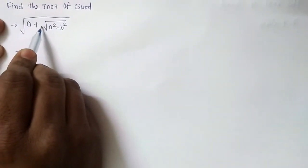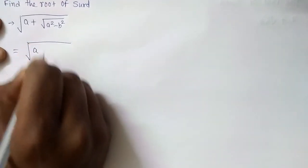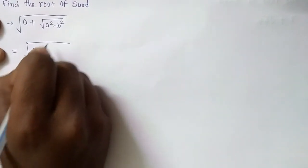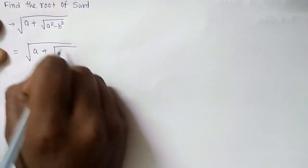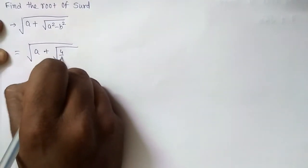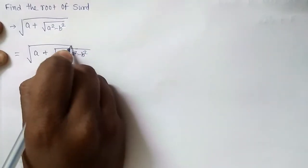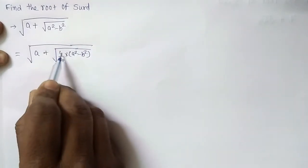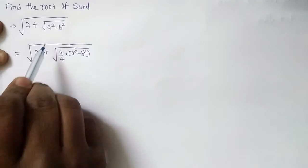Now, as I told you, if it is not there, then we need to take it anyhow. So I should write it 4 upon 4 into a square minus b square. Then 4 and 4 will be nullified. There will be no change in this particular question.